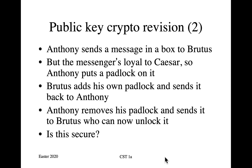I hope you managed to spot that this lockbox protocol is completely insecure. The reason is that Caesar can cause his servant to bring the lockbox to him rather than giving it to Brutus. So Antony puts the message in the box, sends it to Caesar thinking he's sending it to Brutus. Caesar puts a padlock on it, sends it back to Antony and tells his slave to say that it's just come from Brutus.